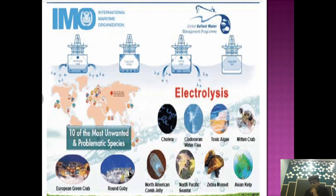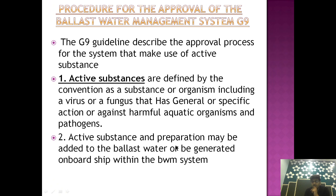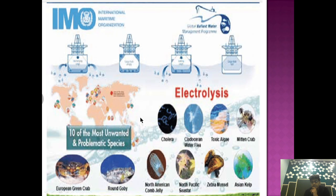The definition has a very important term: the active substance should have a general or specific action against harmful aquatic organisms — meaning harmful and invasive ones. It should not be harmful to other aquatic organisms which are not invasive in nature. The active substance should be effective only on invasive organisms and should not be effective against non-invasive organisms. That is the most important characteristic of an active substance.